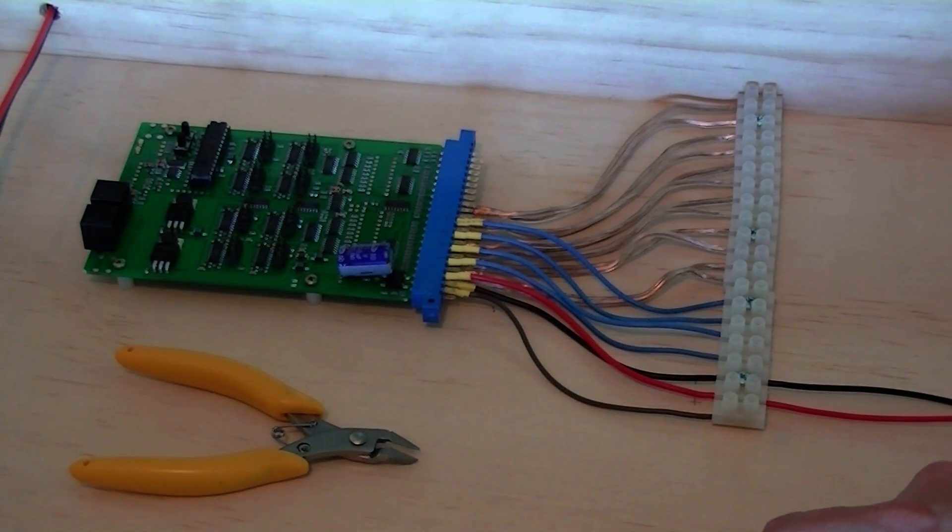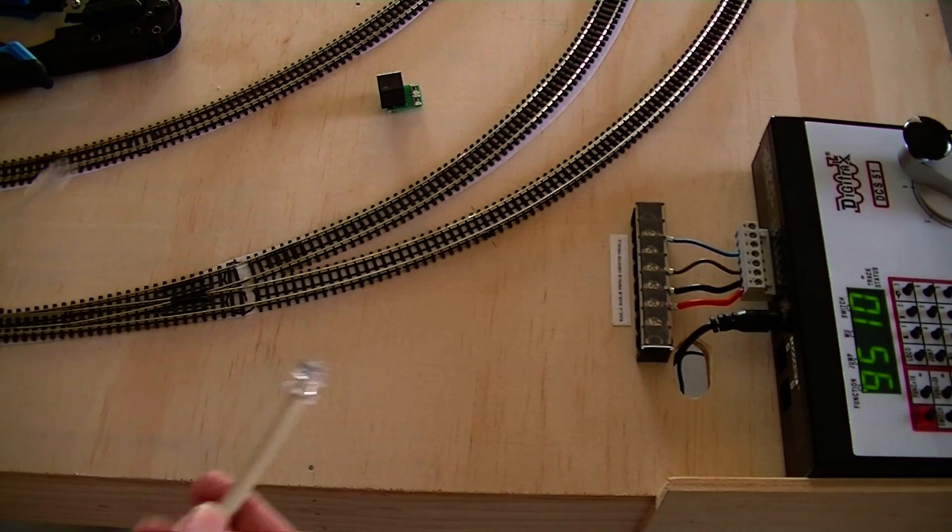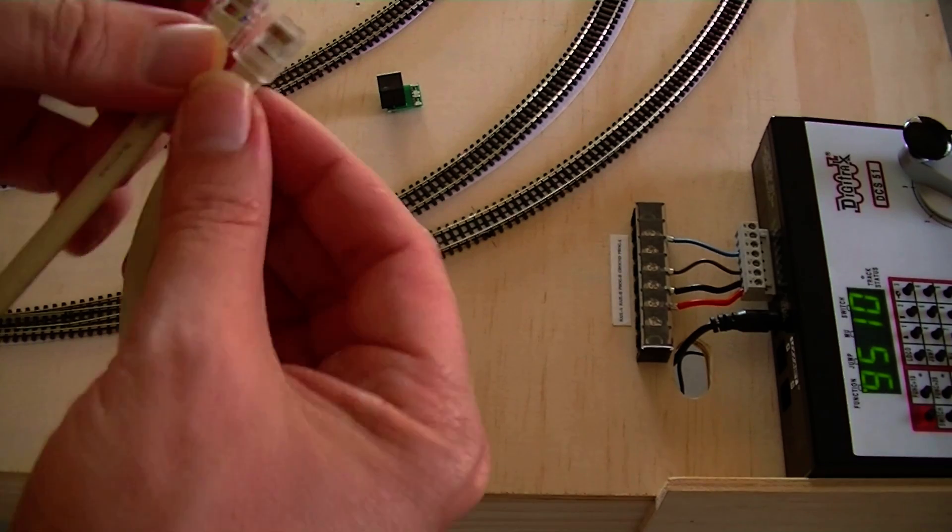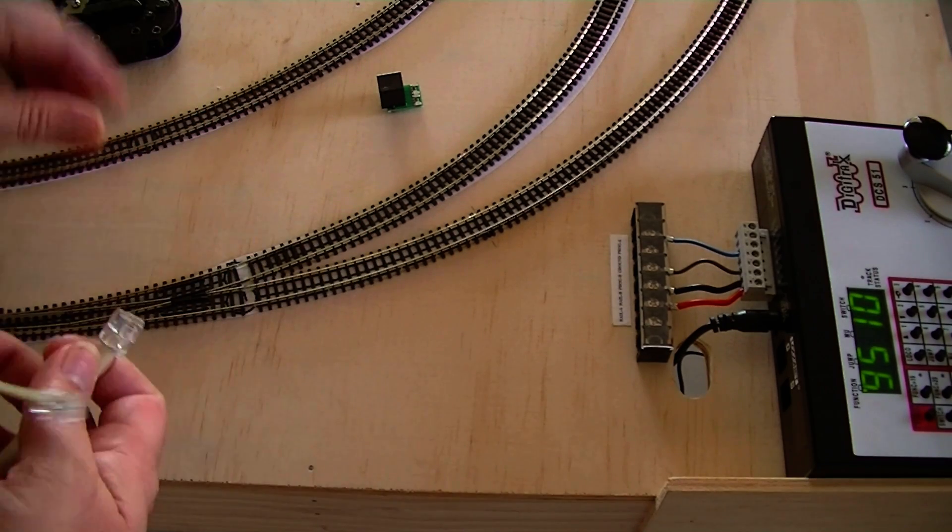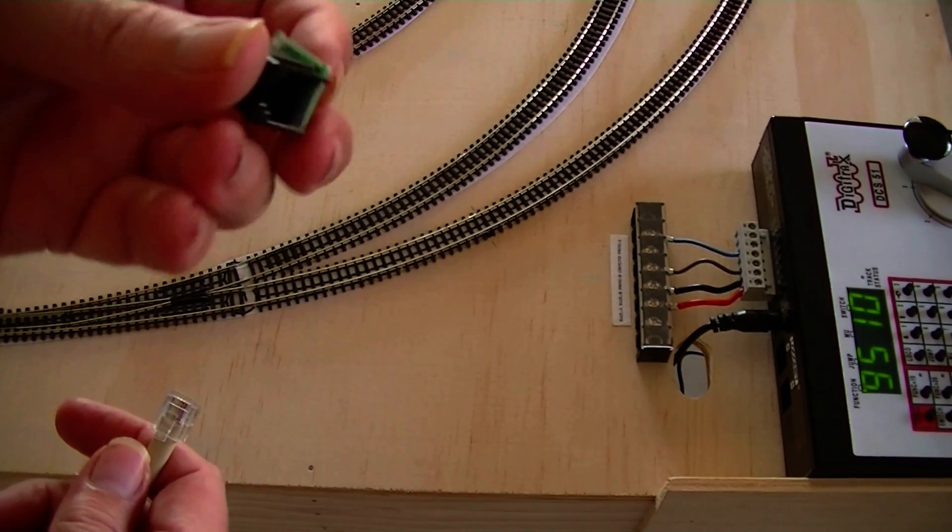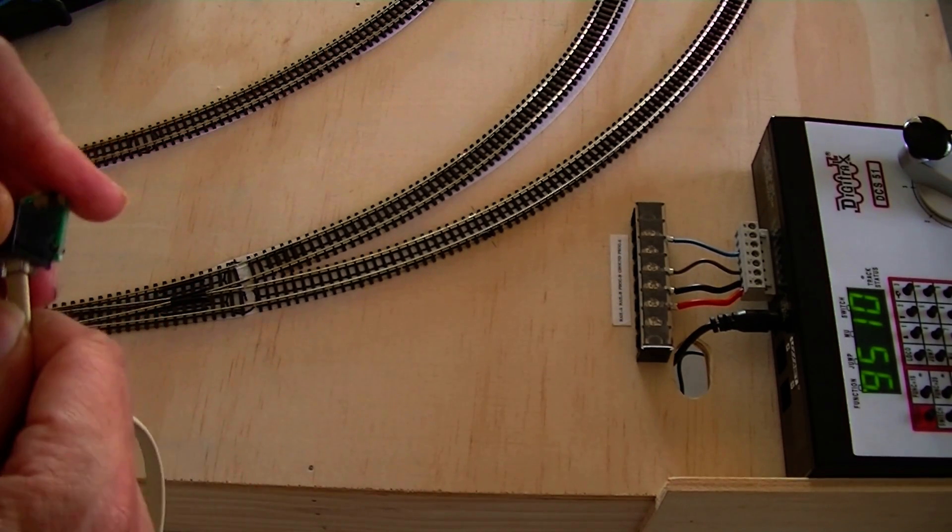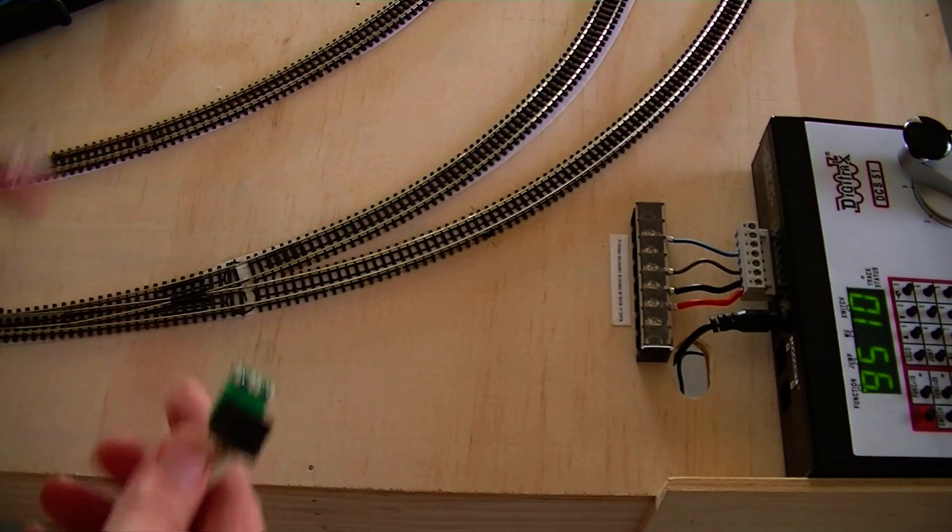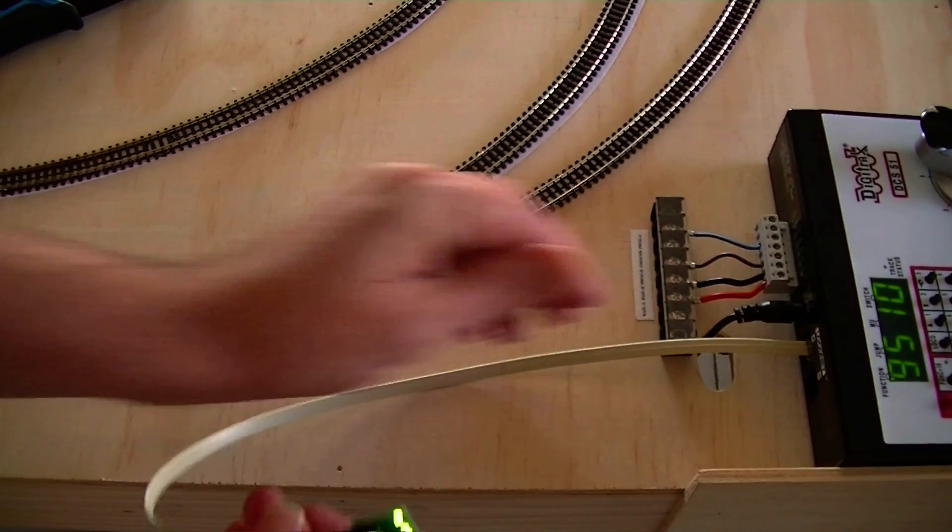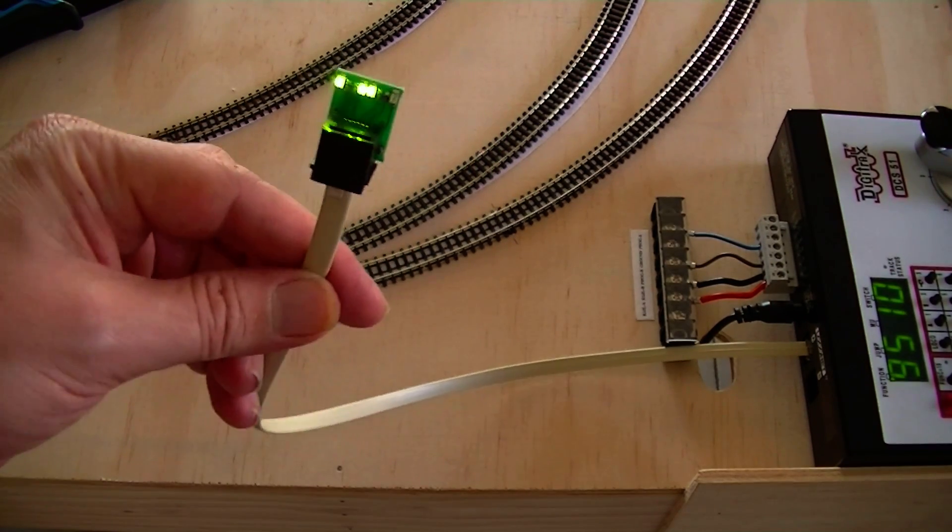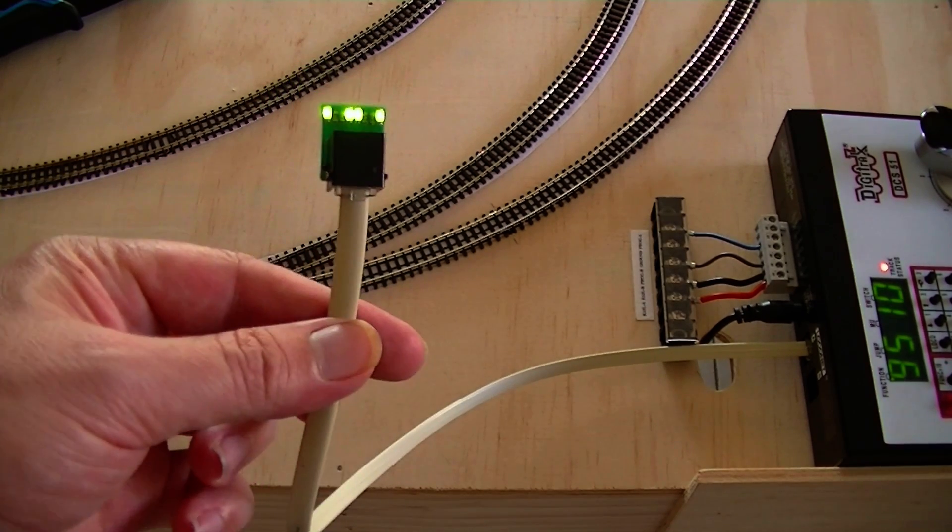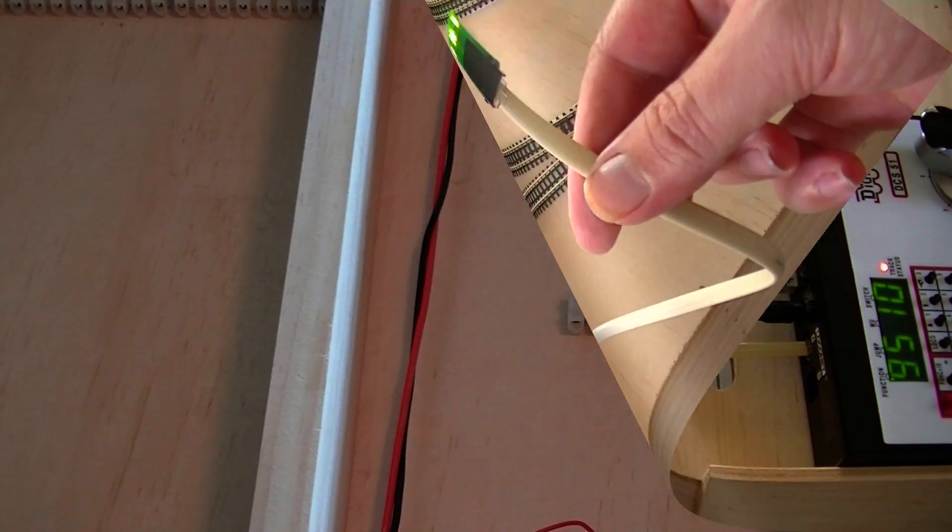Going to make some loco net cables now. Here's the cable that I've made, the loco net cable according to the manufacturer's specifications. Just got the old crimping tool out and made the plug. Now we'll give it a test. This comes with the Digitrax system, this is a cable tester. Plug it in with track power off, you should have three lights. Track power on, four lights. So cable's working fine.